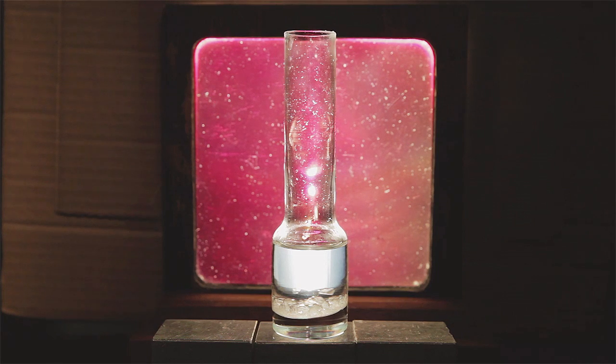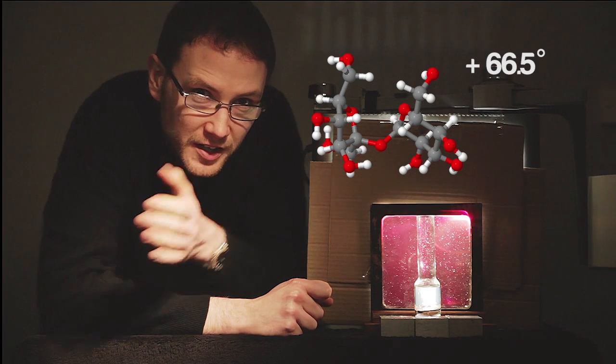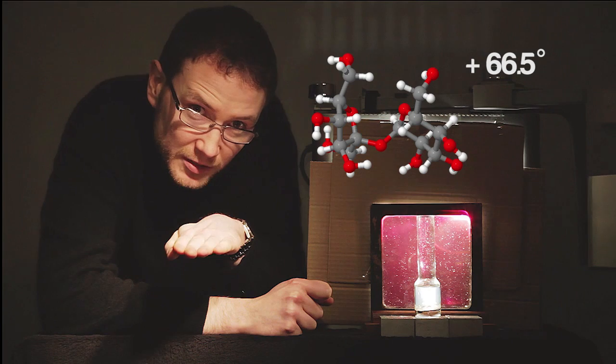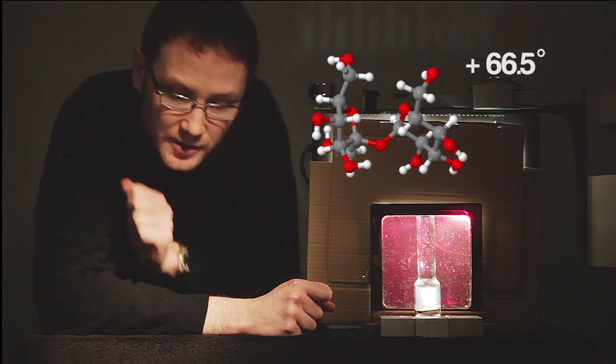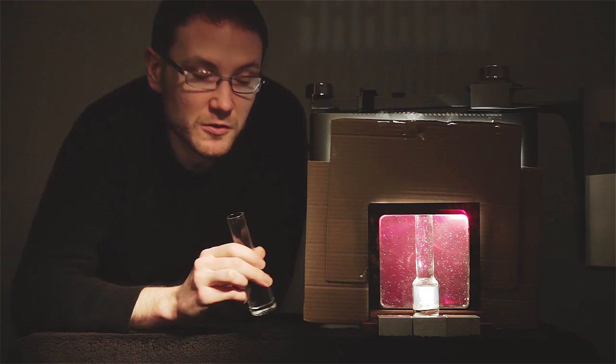This is a solution of sucrose. It's a chiral molecule, and it's dextrorotatory, i.e. it rotates plain polarized light to the right, so it's now able to pass through the second filter. Other sugars, like glucose and fructose, are chiral too.